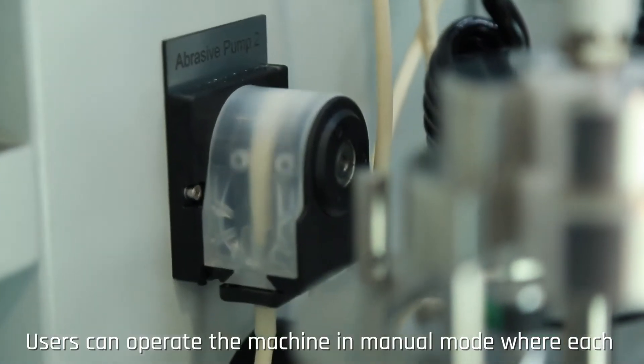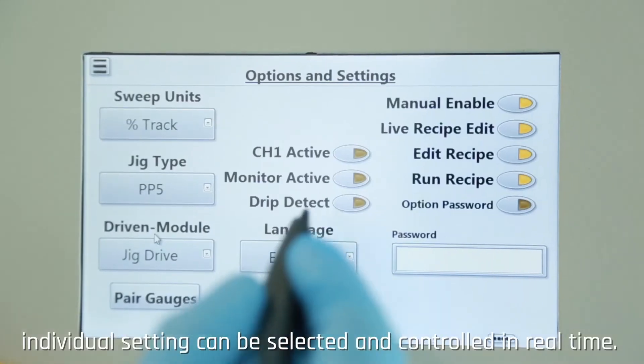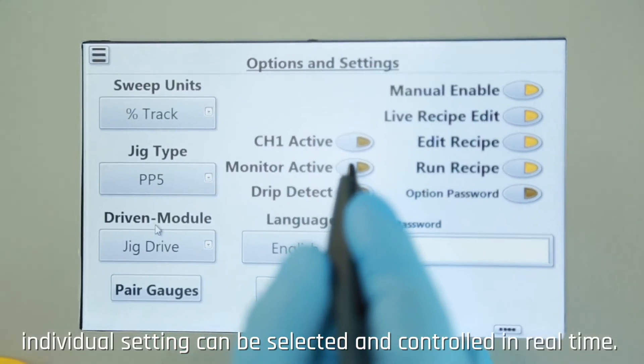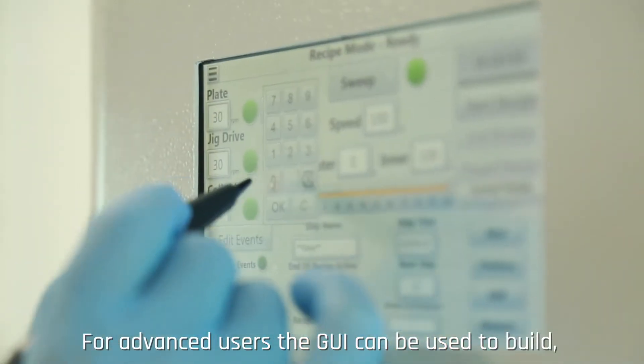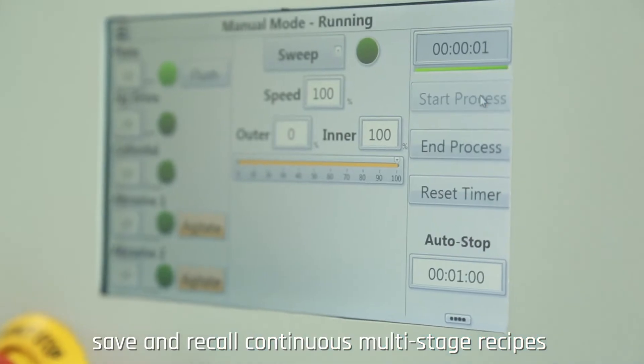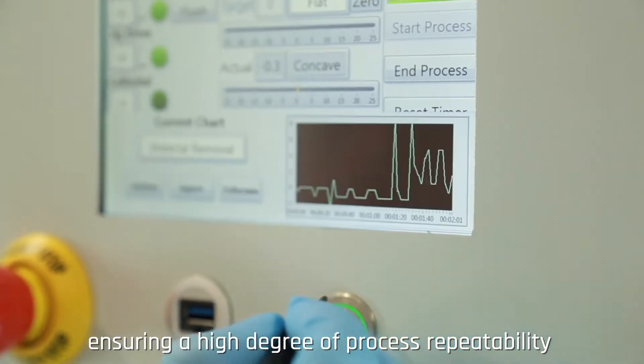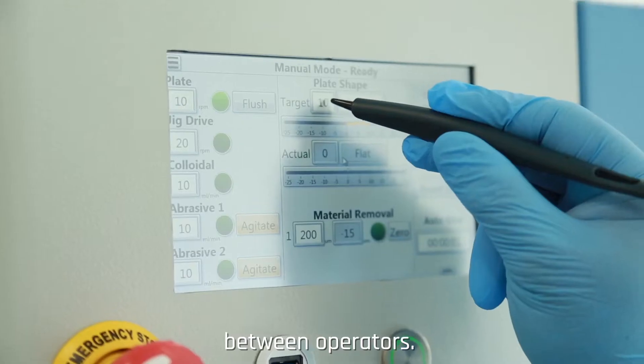Users can operate the machine in manual mode where each individual setting can be selected and controlled in real-time. For advanced users the GUI can be used to build, save and recall continuous multi-stage recipes ensuring a high degree of process repeatability between operators.